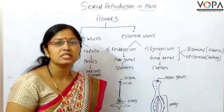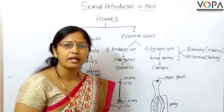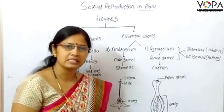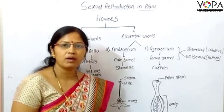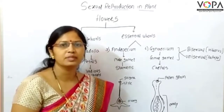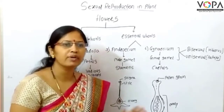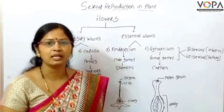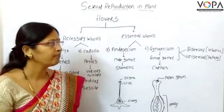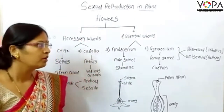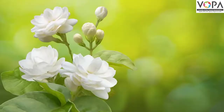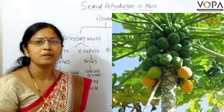When both androecium and gynoecium are present in the same flower, it is called a bisexual flower. When androecium and gynoecium are present in separate flowers, it is called a unisexual flower. An example of a bisexual flower is hibiscus, and an example of a unisexual flower is papaya.